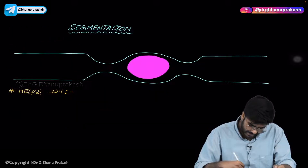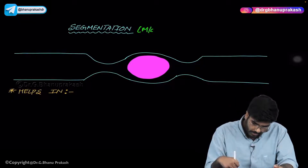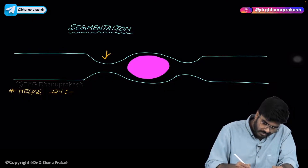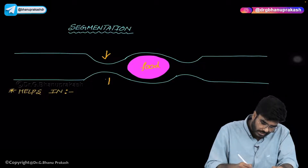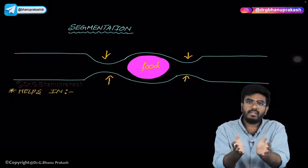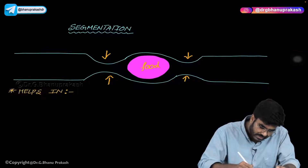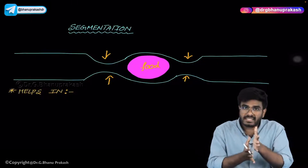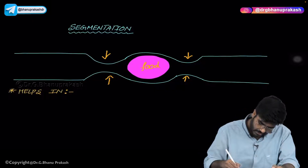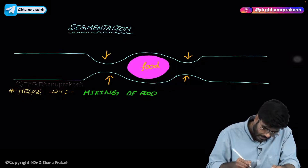Now let's talk about a different type of GI motility called segmentation. Remember, segmentation is the major GI motility. In segmentation, the person is in a fed state with food in the intestine. Both the proximal segment and the distal segment contract simultaneously, placing the food in a small pocket. The food does not move anteriorly and does not go back — it stays in place for mixing and digestion.